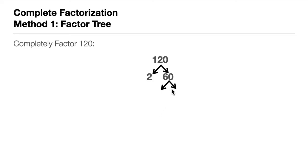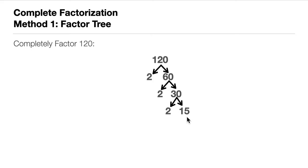60 ends with zero, so it's divisible by 2. What number multiplied by 2 gives 60? That's 30. Continuing the process — as you can see, we're branching out, so this is becoming a tree. 30 is also even, divisible by 2, giving us 15. Now 15 cannot be divided by 2 because it's odd, but it can be divided by 3 because 1 plus 5 equals 6, which is divisible by 3. So what number multiplied by 3 gives 15? That's 5.